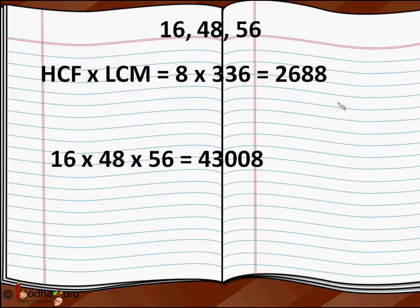And HCF × LCM would be 8 × 336 = 2688. And the product of all the 3 numbers would be 16 × 48 × 56 = 43008. So the product of HCF and LCM in case of 3 numbers is not equal to the product of the numbers.